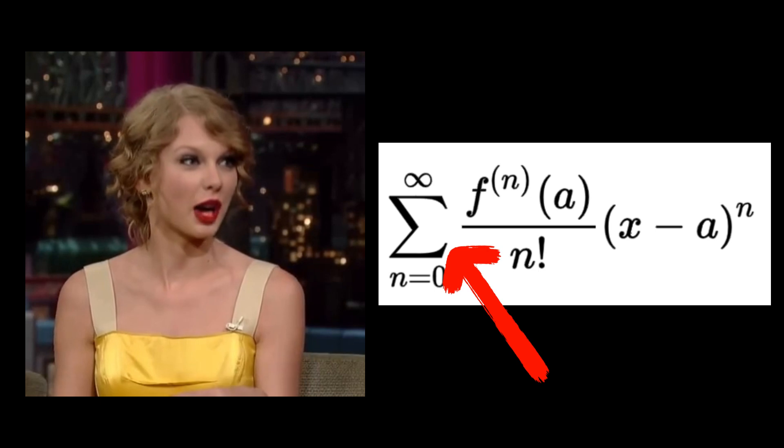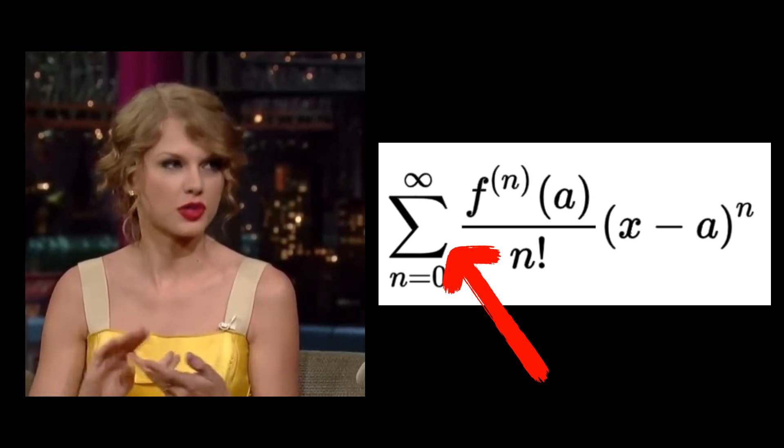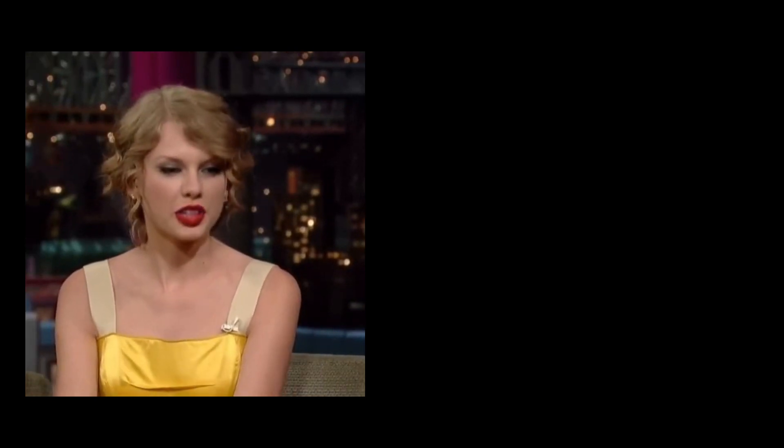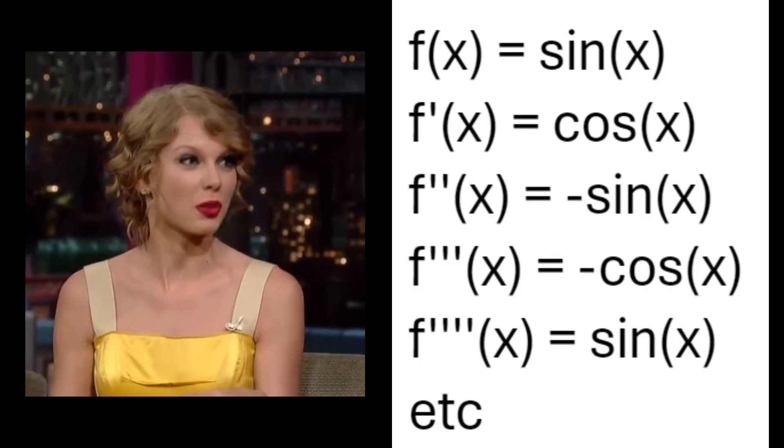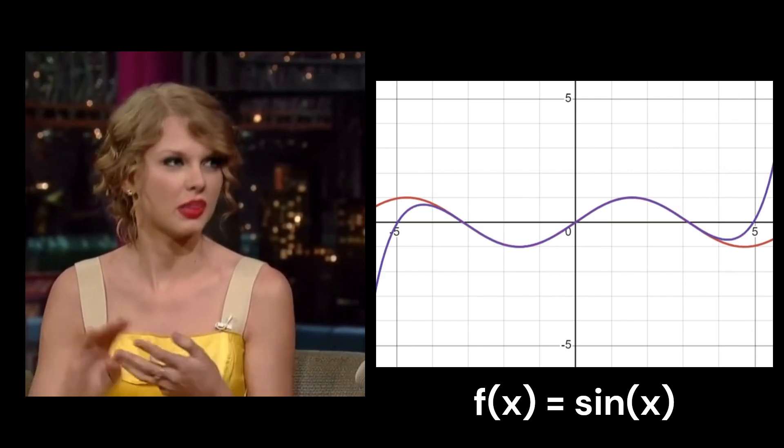If you notice the sigma symbol here, that means take the sum where n ranges from 0 to infinity. The Taylor series allows us to approximate any function as a polynomial if we know its derivatives at a point. Adding values forever gives us an exact approximation.